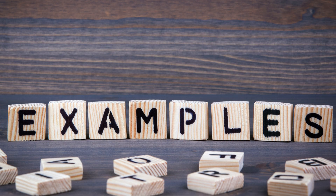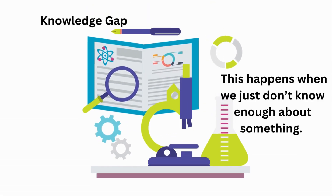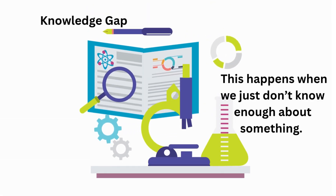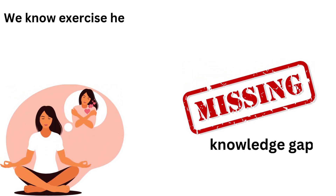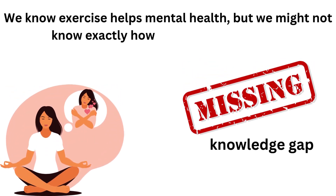All right, let's break down the different types of research gaps with simple examples. First, there's the knowledge gap. This happens when we just don't know enough about something. For example, we know exercise helps mental health, but we might not know exactly how long the benefits last. That missing piece is a knowledge gap.